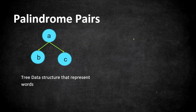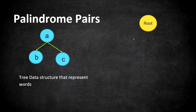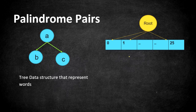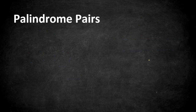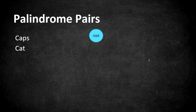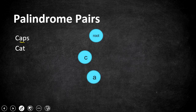Our Trie has a root node which is a dummy node with no value. Each node has 26 children for lowercase characters at indices 0 to 25. For example, inserting the words 'caps' and 'cat': starting with 'caps', nodes are created for c, a, p, s. For 'cat', c and a already exist so only t is created as a new node, demonstrating shared common prefixes.